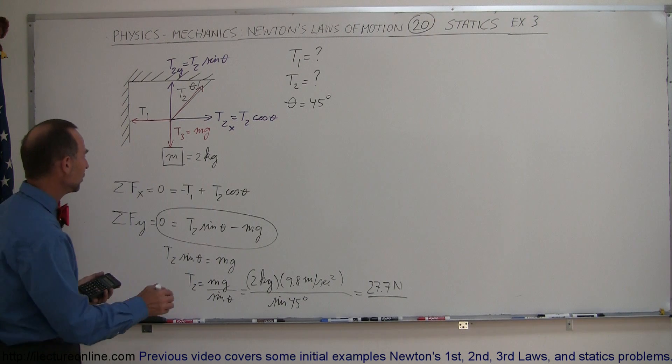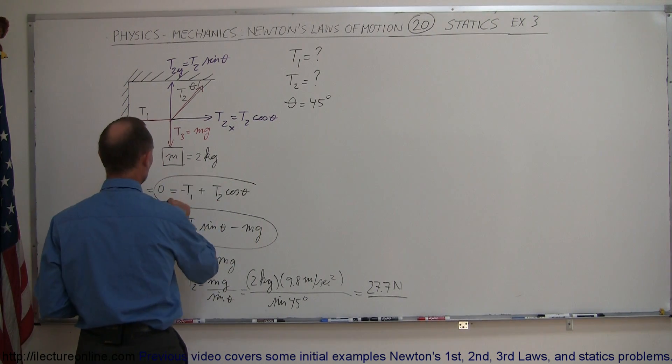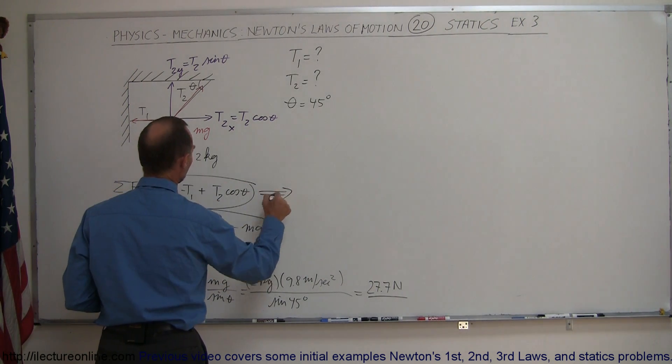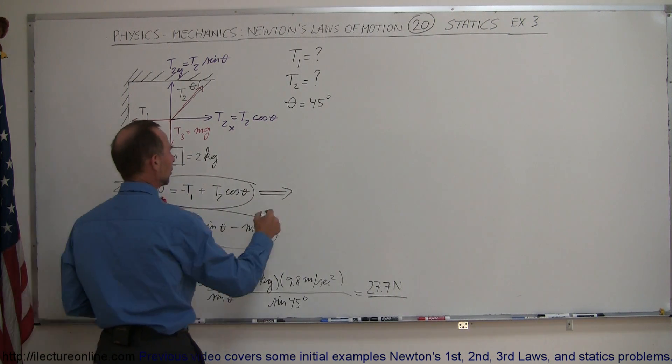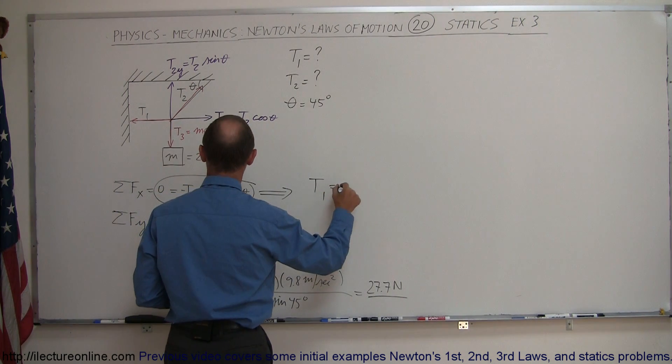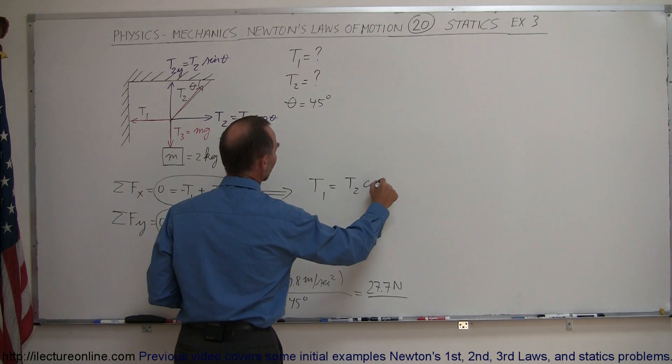So now to find T1 we can use the first equation, we can use this equation right here. Let's solve that equation for T1 by moving that over to the other side. So we have T1 is equal to T2 times the cosine of theta.